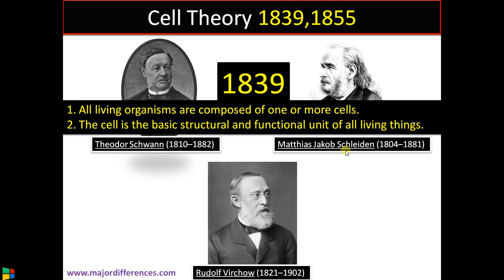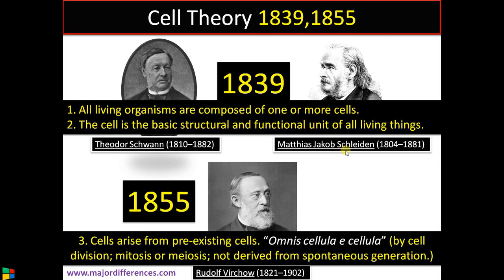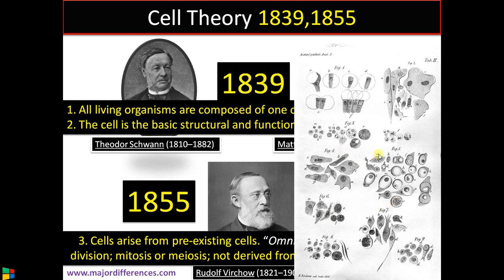The third statement of the cell theory was proposed by another German pathologist, Rudolf Virchow, in 1855. He proposed that all cells arise from pre-existing cells. His famous words: omnis cellula e cellula. Now we know that it is by cell division — mitosis or meiosis — not derived from spontaneous generation, which was a prominent theory before this statement. A diagrammatic sketch representing that all cells arise from pre-existing cells, and the daughter cells have the same qualities as the parent cells — the diagrammatic sketch by Rudolf Virchow. These three statements make the cell theory.